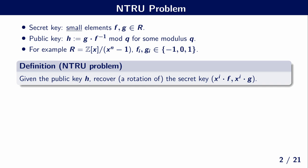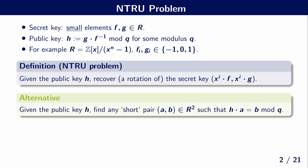The NTRU problem asks to, given the public key H, recover the secret key F and G — or any rotation of them, as that is kind of equivalent. Alternatively, given the public key, you could just ask to find any shortest pair (A, B) such that H times A is equal to B mod Q.